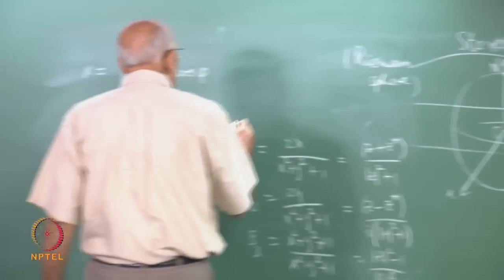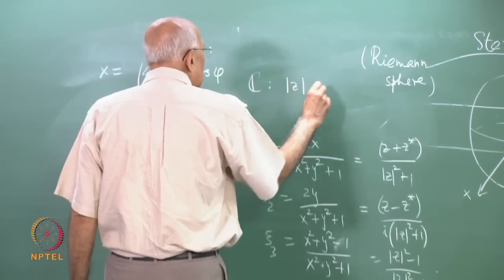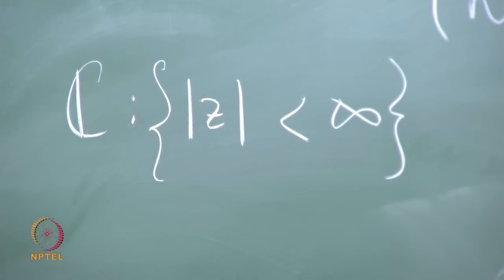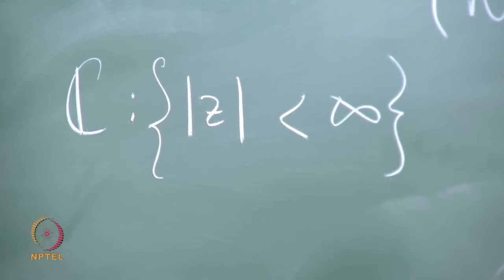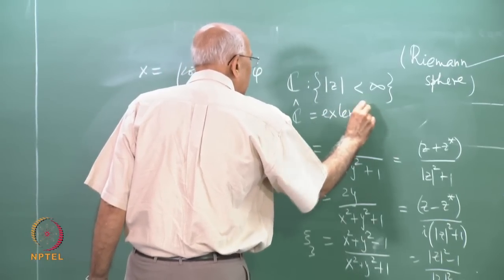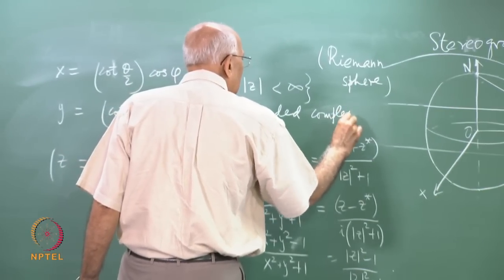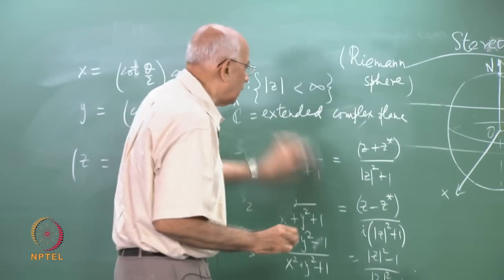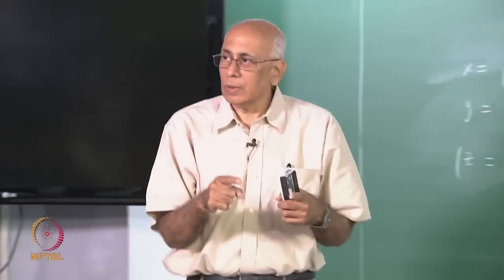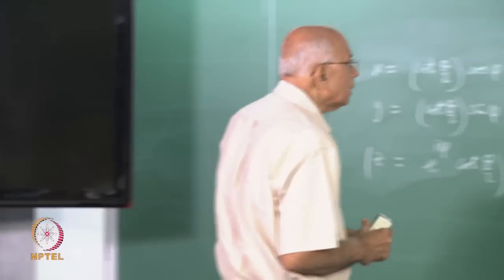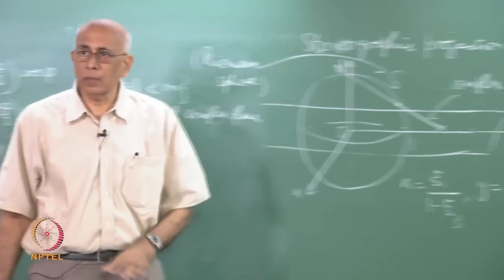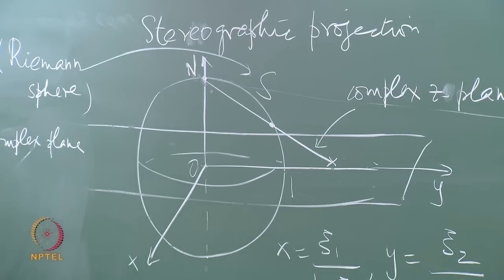This brings infinity to a status similar to that of any finite point in the complex plane. I will often denote the complex plane as the set of all z such that mod z is finite. If I include the point at infinity I call it the extended complex plane, denoted C-tilde, which includes the point at infinity. The Riemann sphere provides the model for the extended complex plane.